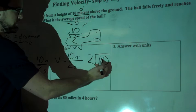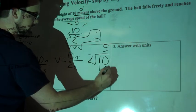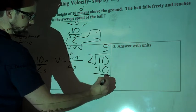2 goes into 1, 0 times. 2 goes into 10, 5 times. 5 times 2 gives me 10. Subtract them. 0.